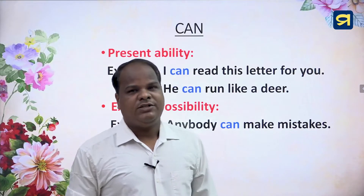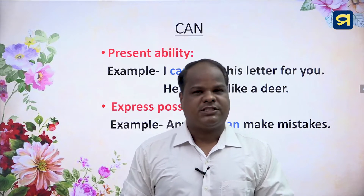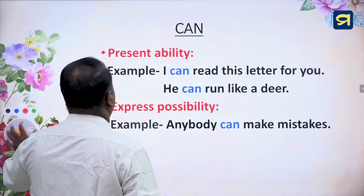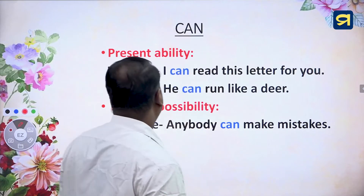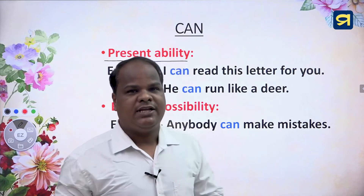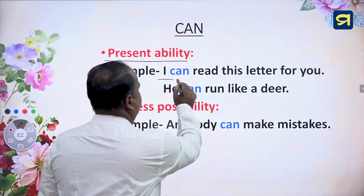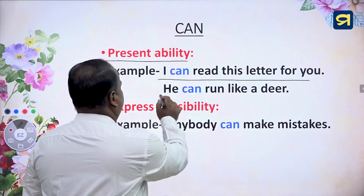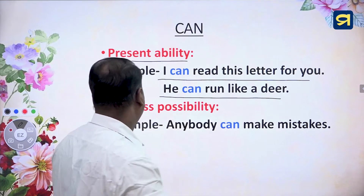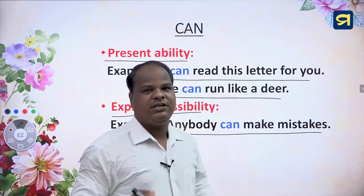Today we shall discuss the use of other modals such as can, could, must, dare, need, and used to. 'Can' can be used in the place of present ability — for example, 'I can read this letter for you' or 'He can run like a deer.' Another use of 'can' is to express possibility, such as 'Anybody can make mistakes.'